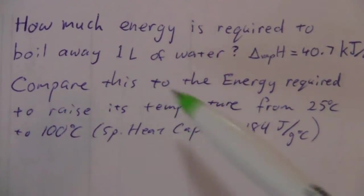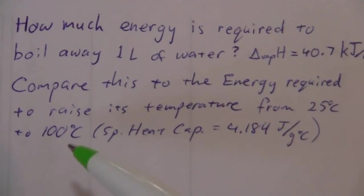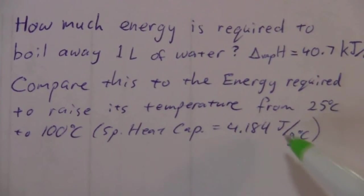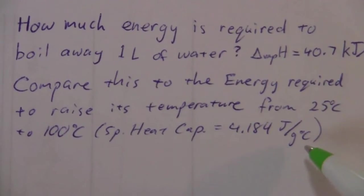And then we want to compare this to the energy required to raise its temperature from 25 to 100 degrees. And the specific heat capacity is 4.184 joules per gram degree Celsius.